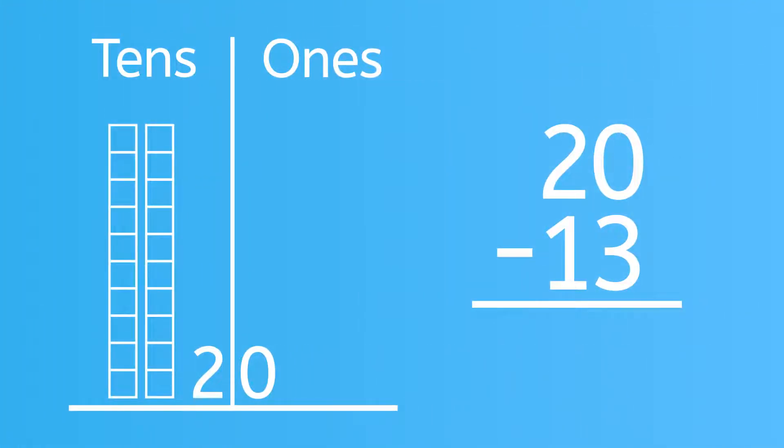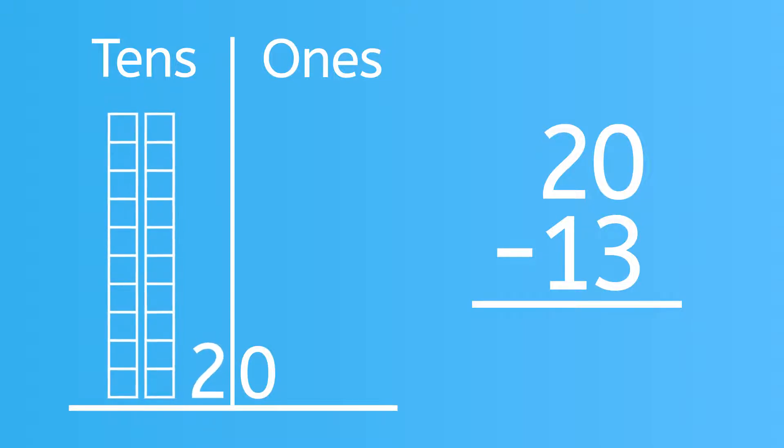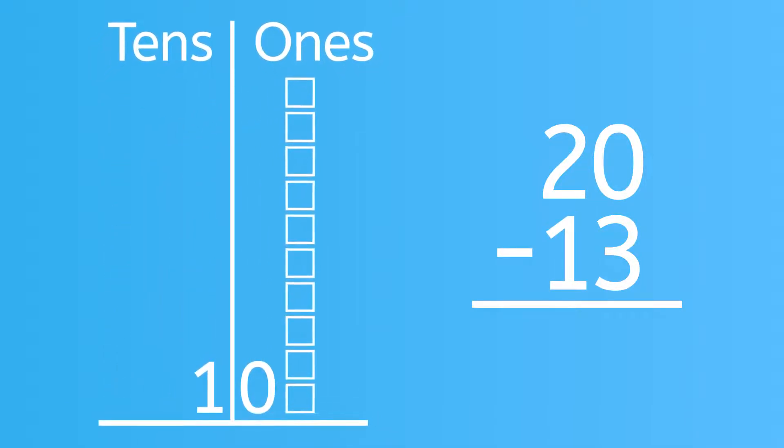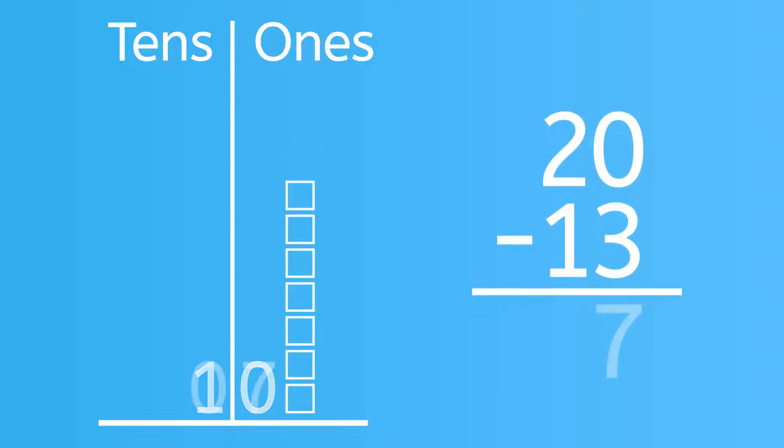Let's try one more problem. We told you we learned to work problems up to 20. This problem starts with 20, or 2 blocks of 10. You're going to subtract 13. We'll take away one entire block of 10, right? You still have 3 left to take away from the remaining 10.